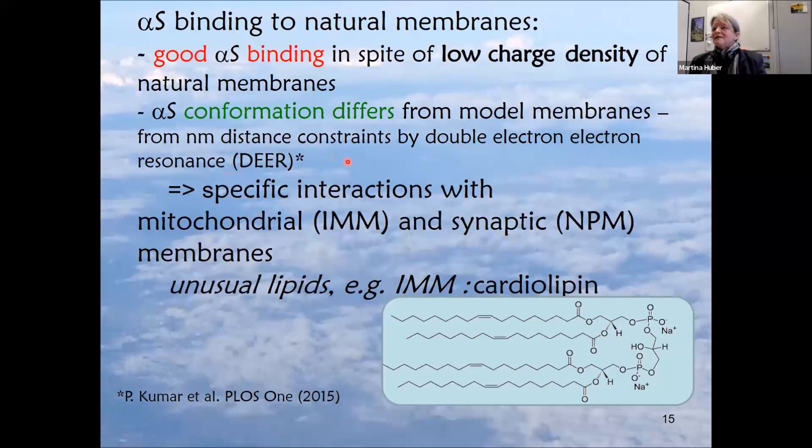We also do DEER and measure distances, so we were able to show that alpha-synuclein binds with a different conformation than we've seen in other cases. The take-home message is that evidently there are natural membranes with specific properties, or the other way around, alpha-synuclein sequence must encode something that enables it to specifically interact with these specific membranes. So much for the membrane interaction.